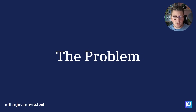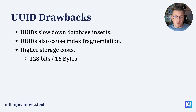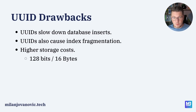However, UUIDs also have some problems. First of all, they slow down database inserts — we'll explain why and run benchmarks to prove it. Secondly, UUIDs cause index fragmentation because they are very random and indexes are sorted structures, so inserting a random value into a sorted index causes fragmentation. And the last point is that UUIDs incur higher storage costs: they are 16 bytes or 128 bits, as opposed to an integer which is 4 bytes or 32 bits, or a long integer which is 8 bytes and 64 bits.